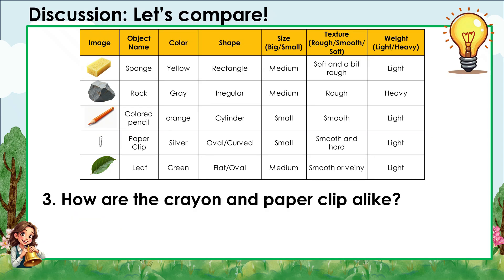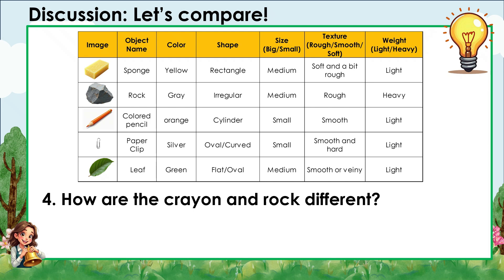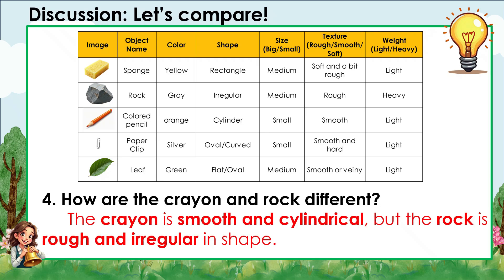Question 3: How are the crayon and paper clip alike? Both are small, smooth, and light in weight. Question 4: How are the crayon and rock different? The crayon is smooth and cylindrical, but the rock is rough and irregular in shape.